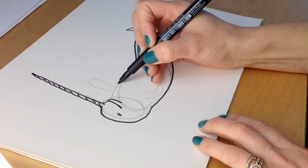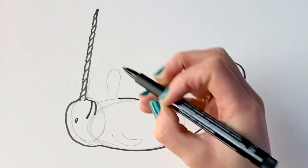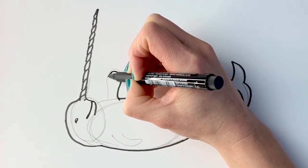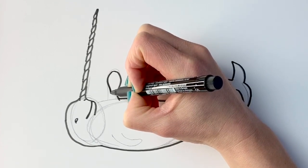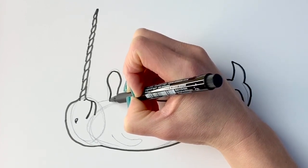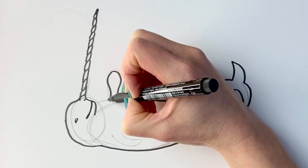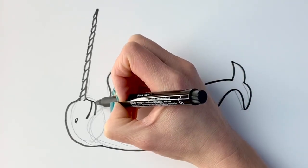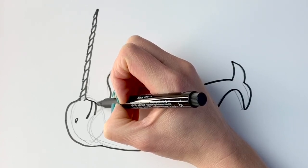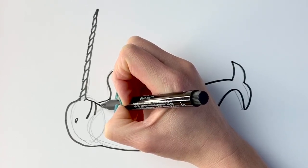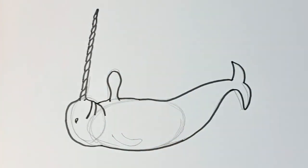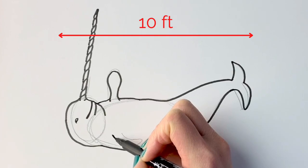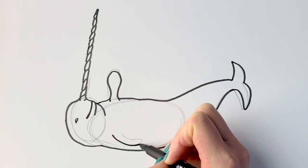And then for the belly. And then the flipper here. So, the tusks are actually a tooth. Bet you didn't know that. And they usually only form on the males, not on the females, although it's not impossible for them to form on the females. And they can actually grow up to 10 feet long. That's incredible.